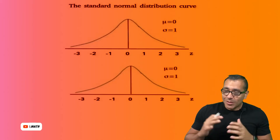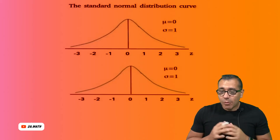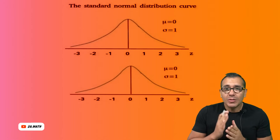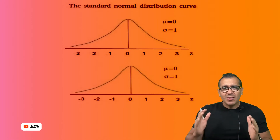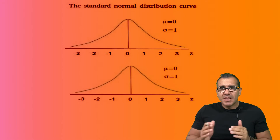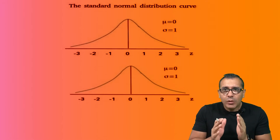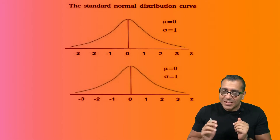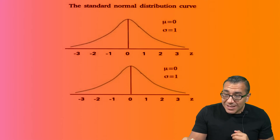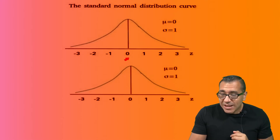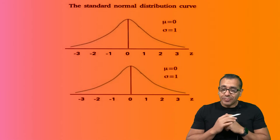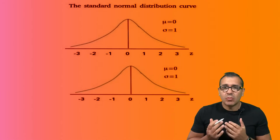All right, mathletes. In this short video, what we want to look at is the standard normal distribution curve. This is our normal distribution — it's bell-shaped. What we have to be careful with here is to make sure that you understand that your mean is zero and your standard deviation is one. And we're going to be talking about Z-scores.